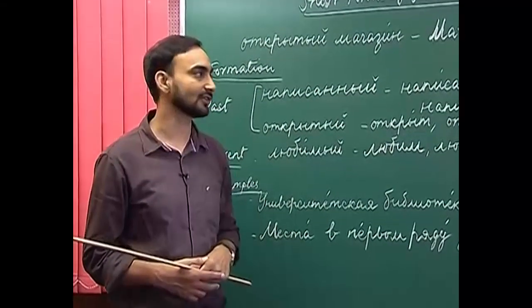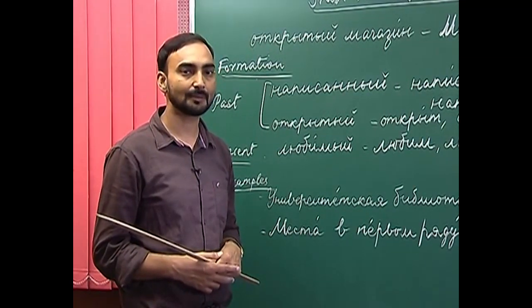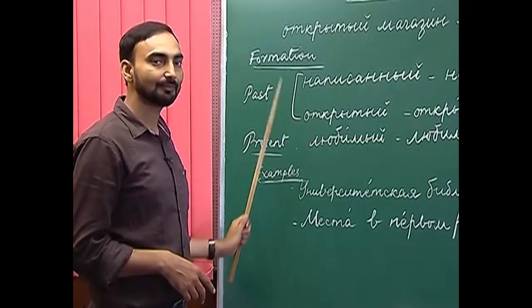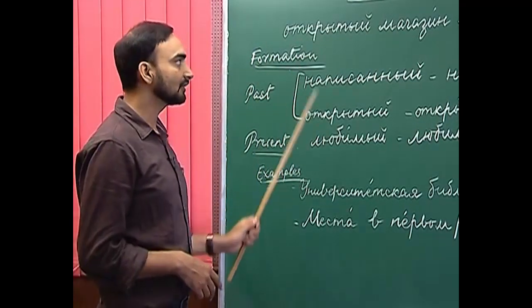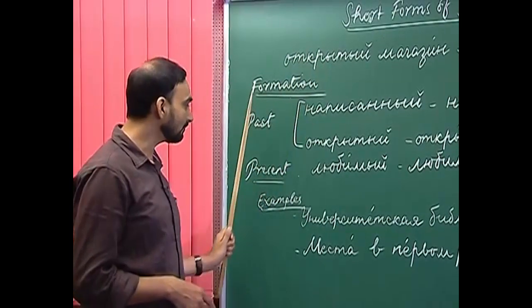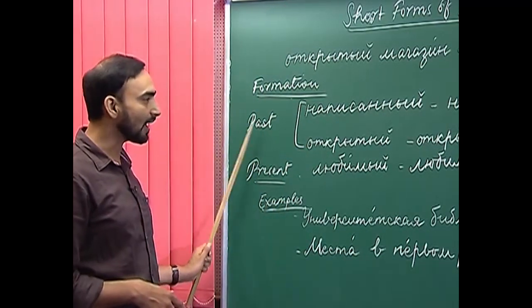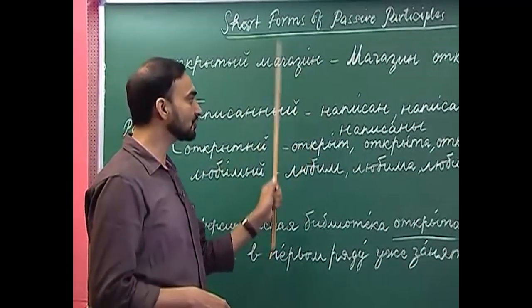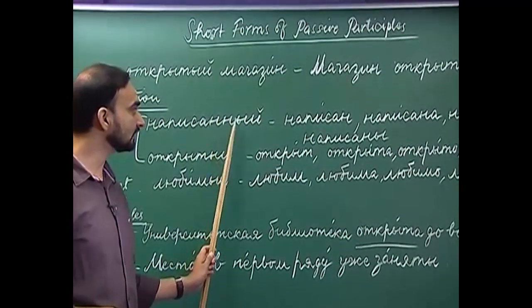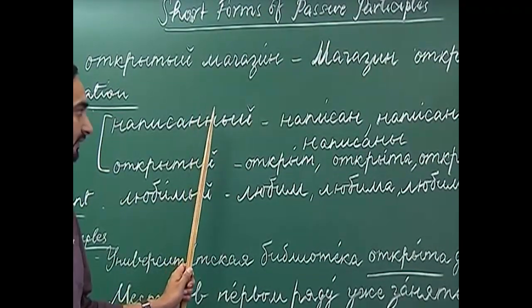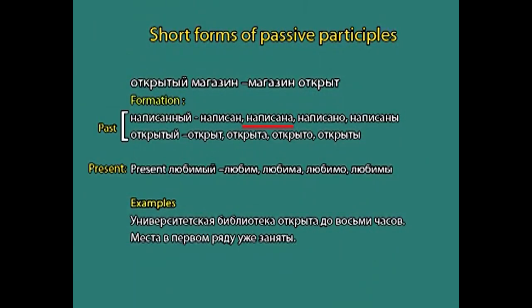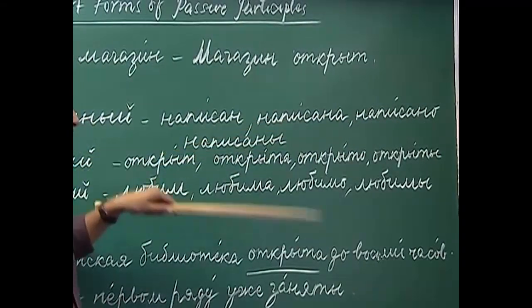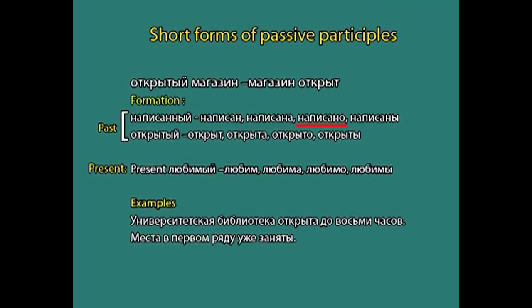First let us find out how short forms of passive participles are formed. Passive participles have present participle passive and past participle passive, and short forms are derived from both. From the past participle passive, for example 'napisannyy', how do we form the short form? You drop -n and the ending — so if there are two n's, you drop one n and the ending. We get 'napisan', which is the masculine form.